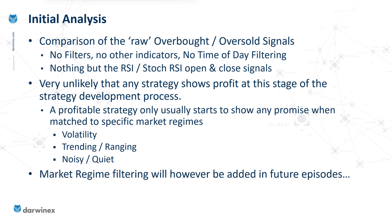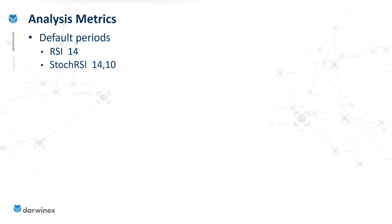In future episodes, I will be adding those market regime filters and hopefully the results will improve dramatically. Let me explain the conditions I've used for this analysis. I'm not going to optimize any parameters — keeping the default 14 periods for RSI, 14 for the RSI component of Stochastic RSI, and 10 for the Stochastic calculation. I'll be testing on 28 currency pairs simultaneously.